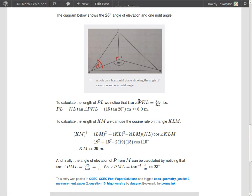So tangent of the angle, tangent of 28 degrees, is opposite, which is PL, over adjacent, which is KL. And rearranging that to find PL, we get that PL is equal to 15 tan 28 degrees.